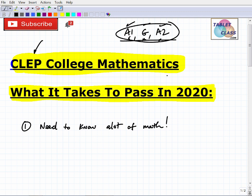Now there is a different CLEP exam. There's college algebra, which is not as difficult. Well, it doesn't cover as much math. Let's say this much, but the college mathematics is, there's a lot of math here. So you need to know a lot of math is the first thing I would say.